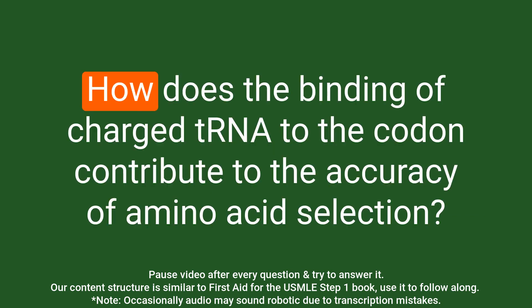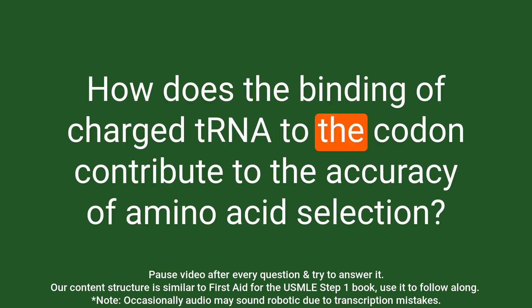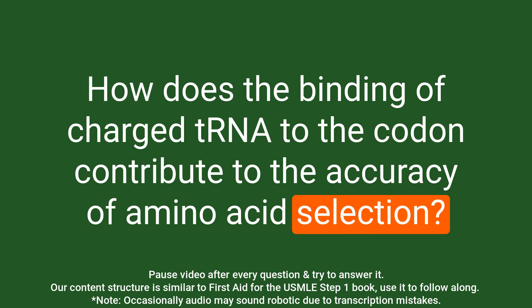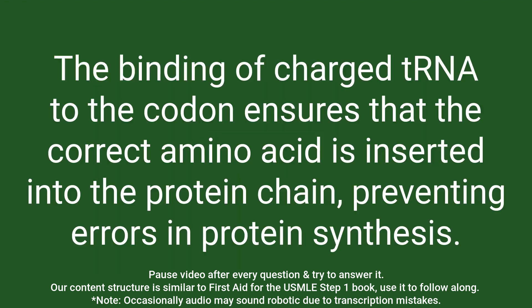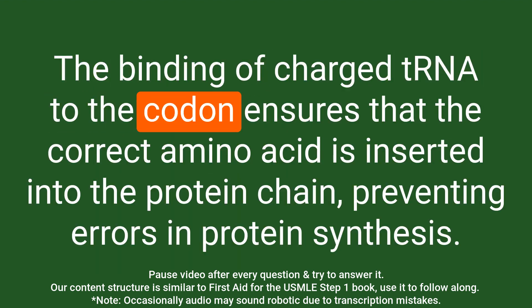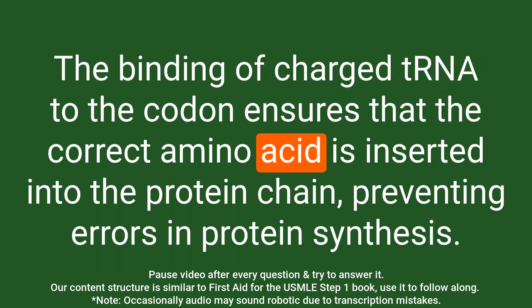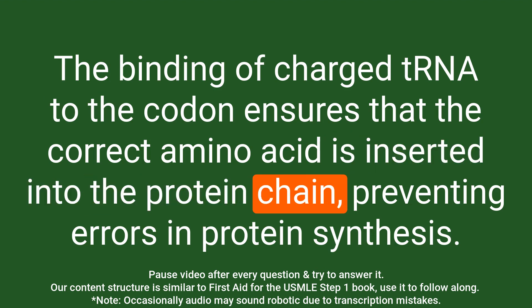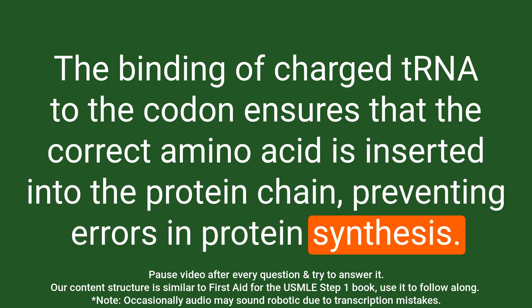Question: How does the binding of charged tRNA to the codon contribute to the accuracy of amino acid selection? Answer: The binding of charged tRNA to the codon ensures that the correct amino acid is inserted into the protein chain, preventing errors in protein synthesis.